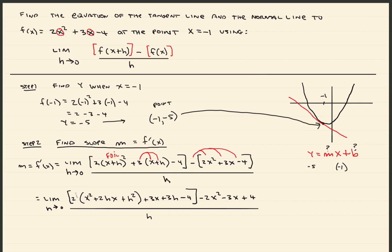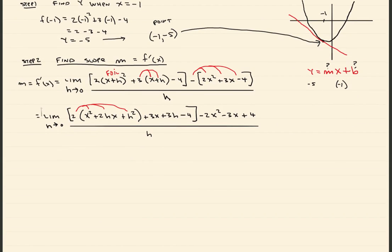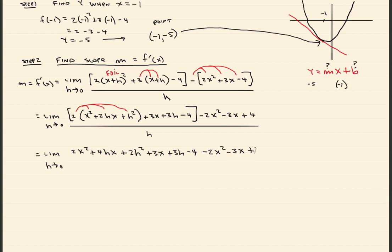Next step: distribute the 2 across all three terms inside the bracket. That gives you the limit as h approaches 0 of 2x squared plus 4hx plus 2h squared plus 3x plus 3h minus 4, then minus 2x squared minus 3x plus 4, the entire thing divided by h. Remember, you're going through this entire process to get h out of the denominator — if you let h go to 0 with h still there, you get division by zero.